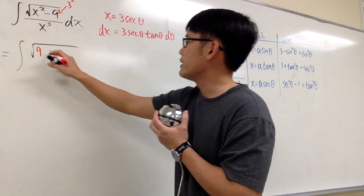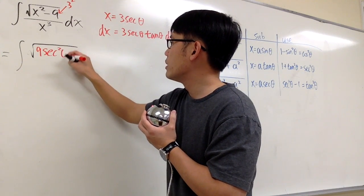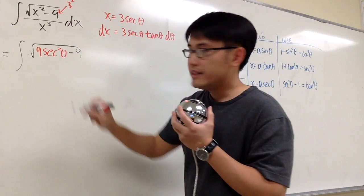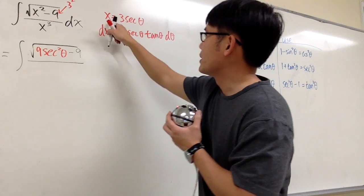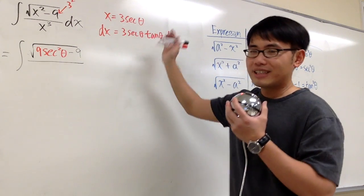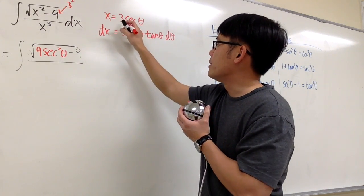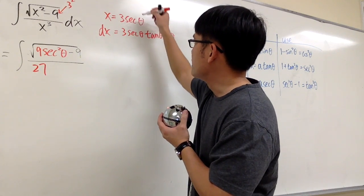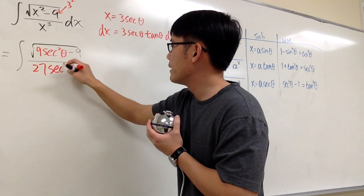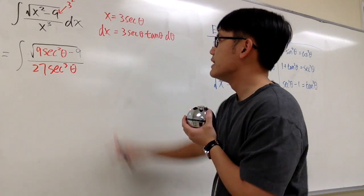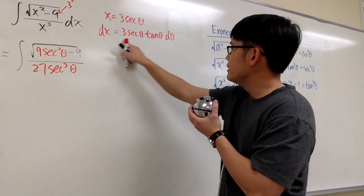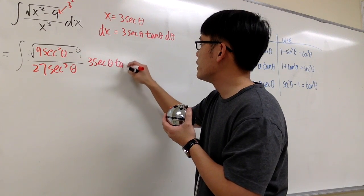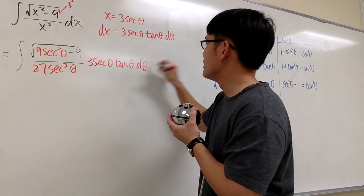So we have secant squared theta, and then minus 9. In the denominator we have x to the third power. We cube both sides: x to the third power is the same as 3 to the third power, which is 27, and then secant to the third power theta. And then dx is 3 times secant theta tangent theta d theta.